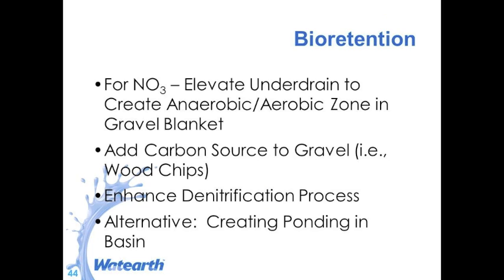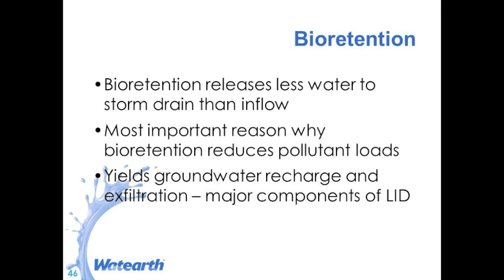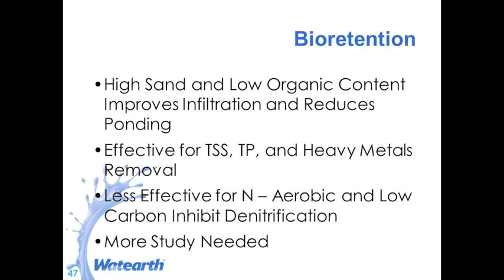At least 18 inches of growing media is needed for both plants and pollutant removal. If you go deeper, it can help with nutrients. The most important reason bioretention reduces pollutants is that it basically does not discharge all of the stormwater that enters it — every piece of stormwater that stays in the system is not taking pollutants out with it.